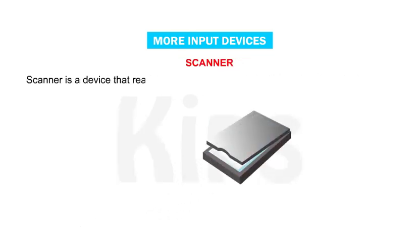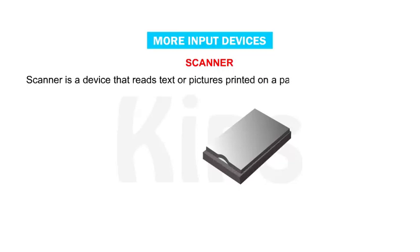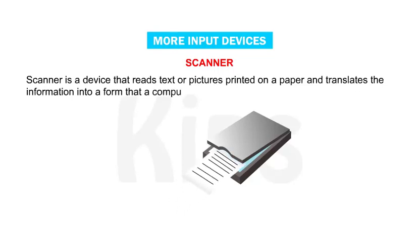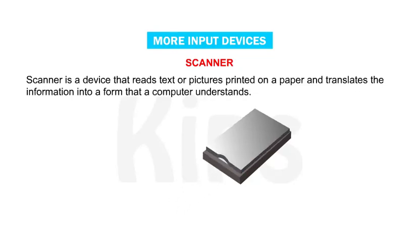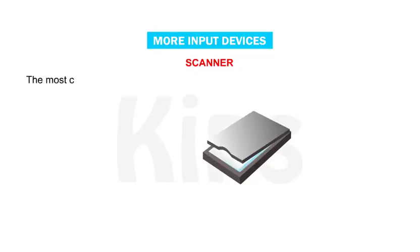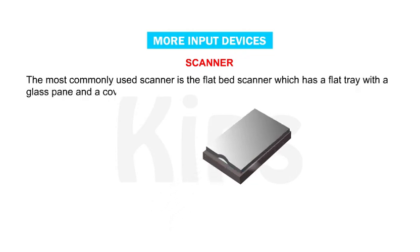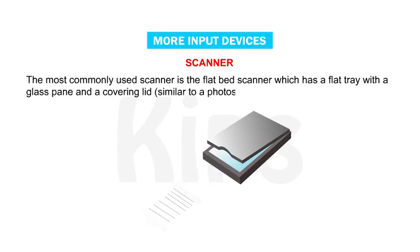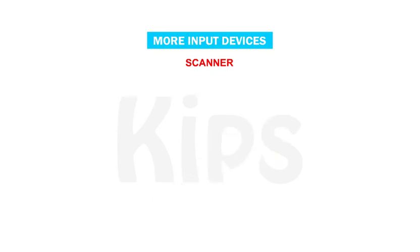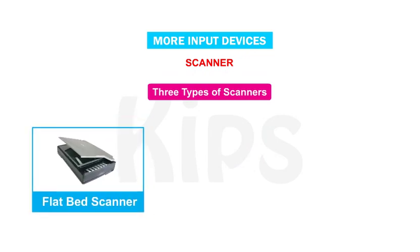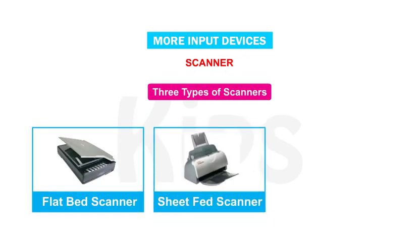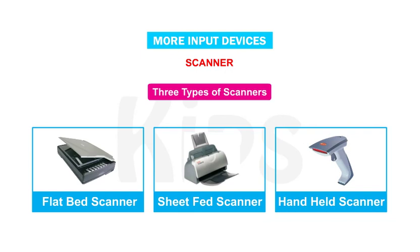A scanner is a device that reads text or pictures printed on paper and translates the information into a form that a computer understands. The most commonly used scanner is the flat-bed scanner, which has a flat tray with a glass pane and a covering lid, similar to a photostat machine. There are three types of scanner: flat-bed scanner, sheet-fed scanner and handheld scanner.